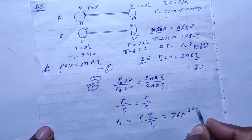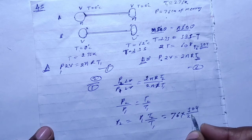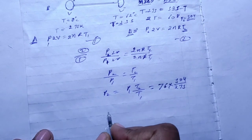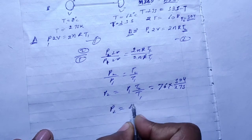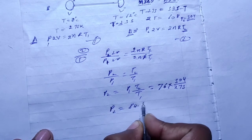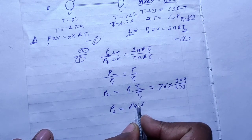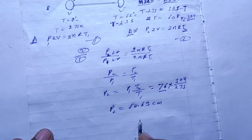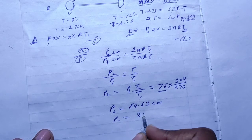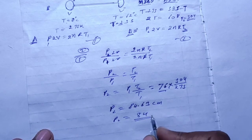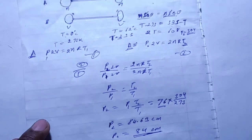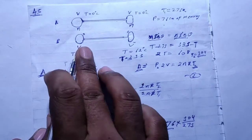T2 is 304 Kelvin and T1 is 273 Kelvin. Solving the combined gas equation, P2 equals 84.63 cm of mercury, approximately 84 centimeters of mercury. This is the final pressure P2 inside the bulb.